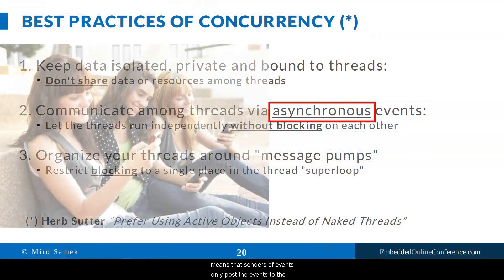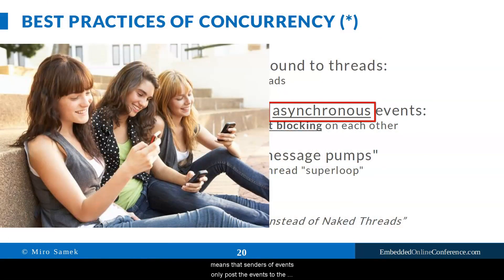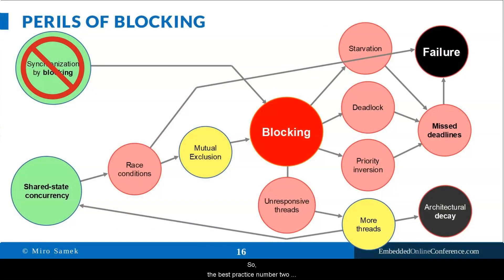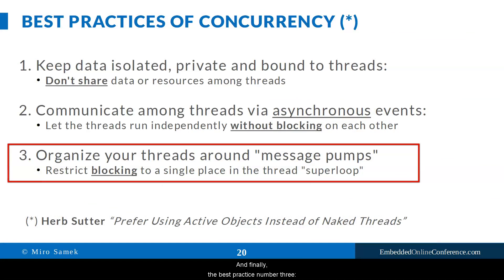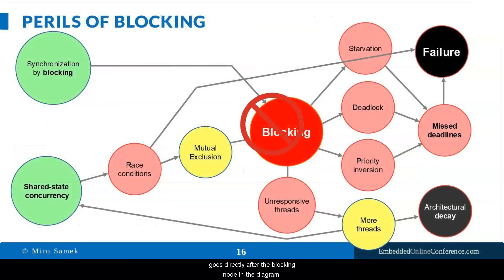Asynchronous communication means that senders of events only post the events to the recipients, but they don't wait in line — meaning they don't block — until the event is processed. So best practice number two is designed to eliminate the synchronization-by-blocking node from the Perils-of-Blocking diagram. And finally, best practice number three: organize your threads around message pumps, which goes directly after the blocking node in the diagram.